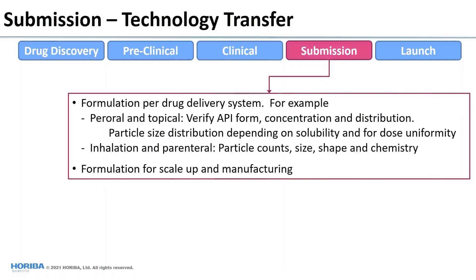As you get towards the end of this process, you're going to start looking at your analytical techniques again. At your submission, you certainly will need to talk intelligently about your drug delivery system and formulation and how you'll measure things. For oral or topical formulations, you want to verify your API form, concentration, and distribution. You start looking at particle size distribution depending on drug solubility, as well as dose uniformity for solid dosage forms. For inhalation and parenteral dosages, you're looking at particle counts, size, shape, and particle chemistry.